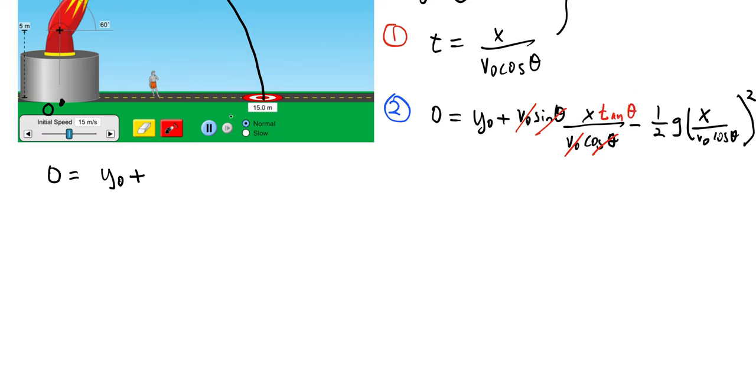So if I do that, I have this term is now just x tan theta minus one half g x squared over V0 squared cos squared theta, where I've squared everything inside this bracket.